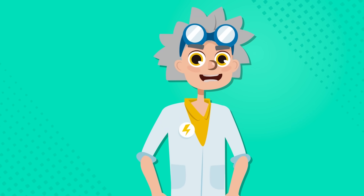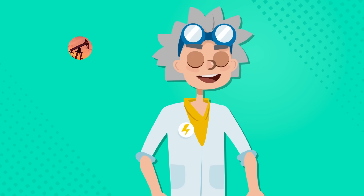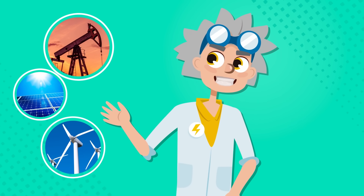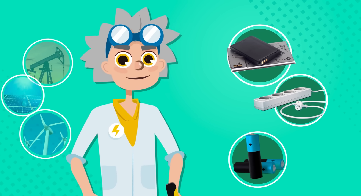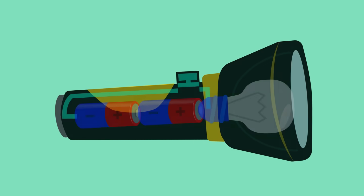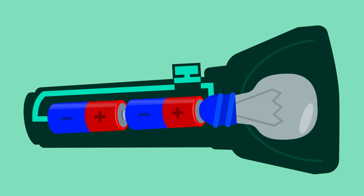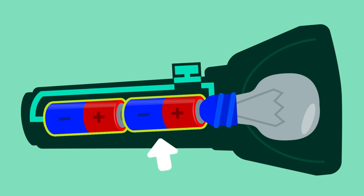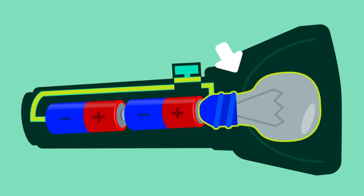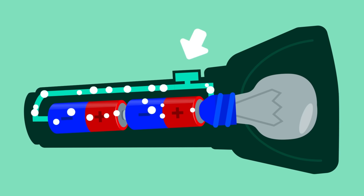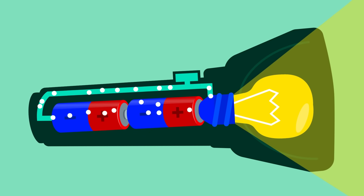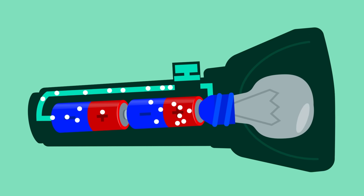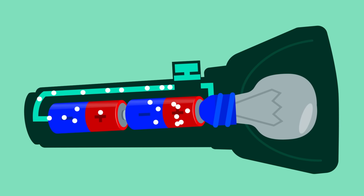Circuits have two parts: the first is the source of electricity, and the second corresponds to the materials that allow the flow of electric charges. Here we see an electric circuit inside a flashlight — there are two batteries which are the source of electricity, and wires that carry the electric charge to the bulb. When I turn on the switch, the electric charges begin to flow and the bulb emits light. When I turn off the switch, the charges stop flowing and the bulb turns off.